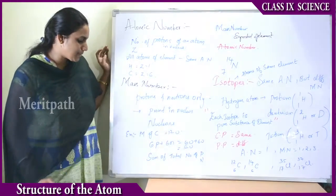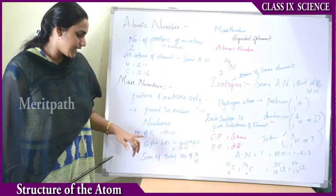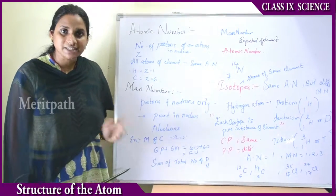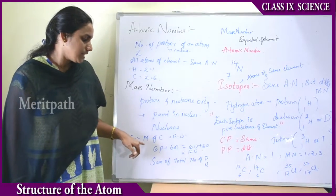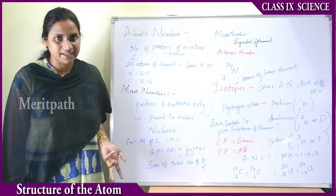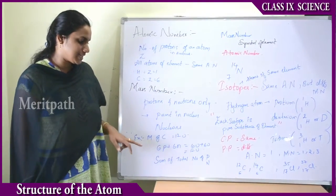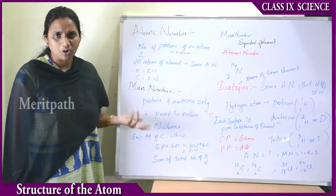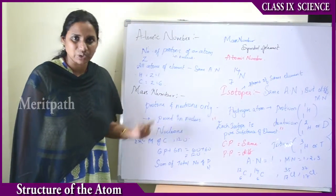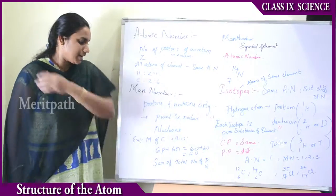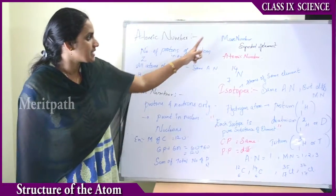For example, for carbon there are 6 protons and 6 neutrons, therefore the mass number is 6 + 6 = 12 units. The mass number of carbon is 12. Similarly, we can calculate the mass number for oxygen, nitrogen, or any element by the summation of both protons and neutrons. The mass number is represented by the symbol A.